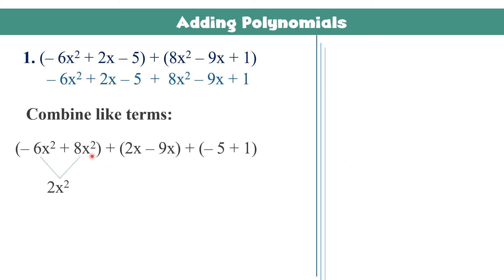Copy the variable x squared. Then for the second set of terms, 2x minus 9x — again they have different signs, so subtract and copy the sign of the larger number. 9 is larger, so the answer must be negative. 9 minus 2 gives 7, therefore it becomes negative 7x.